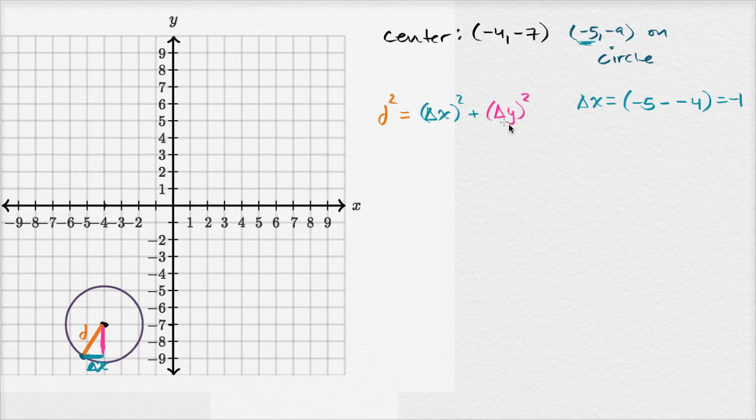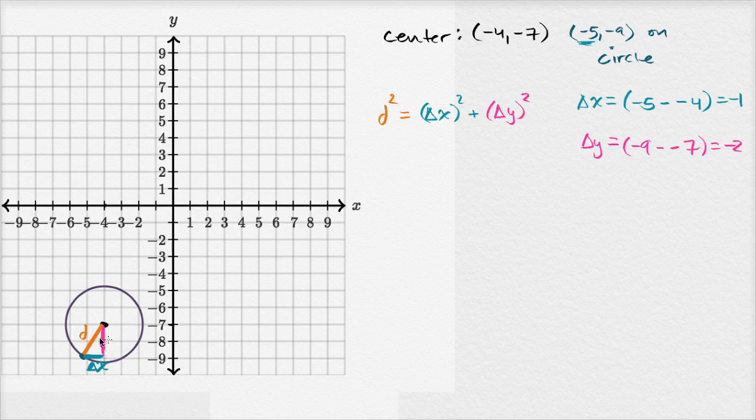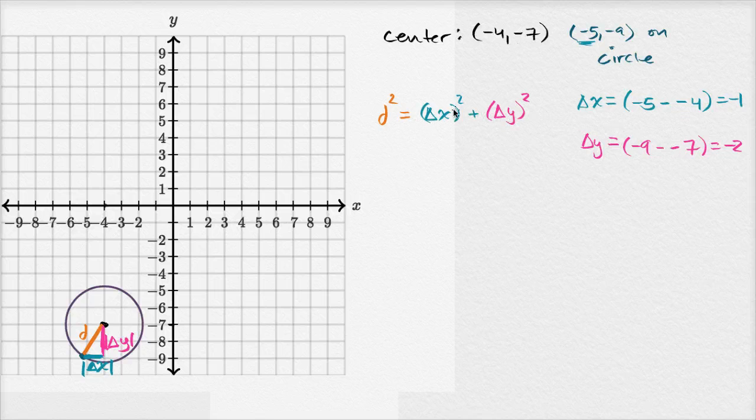Now what is our change in y? Well this is the finishing y, negative nine, minus negative seven, minus our initial y, is equal to negative two. And notice, to go from that point we go negative two. So we could call the length of that side the absolute value of our change in y, and this the absolute value of our change in x. And it doesn't really matter because once we square them, the negatives go away.